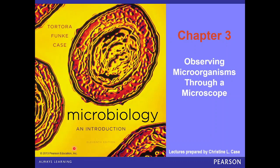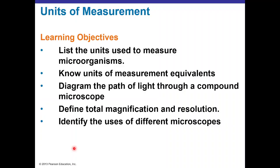Hello. Chapter 3 is about observing microorganisms through a microscope. In this chapter, we're going to learn what are the units of measure to measure microorganisms, what are some of the equivalents of these measurement units, and also we're going to see principles of microscopy including the types of microscopes, the parts of the light or compound microscope, total magnification and resolution, and the uses of those specific types of microscopes.